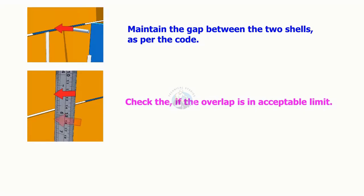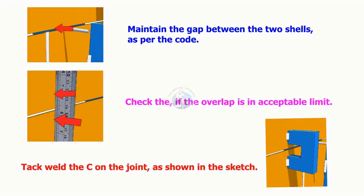Make sure the overlap is in the acceptable limit. Tack weld seams on the joint, as shown.